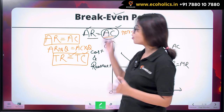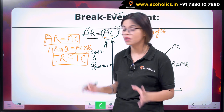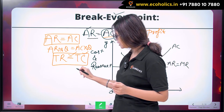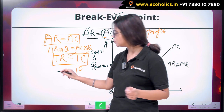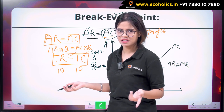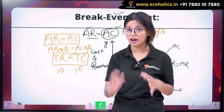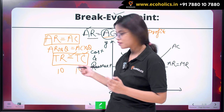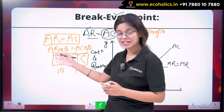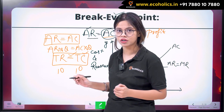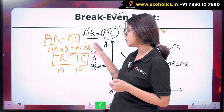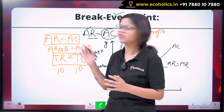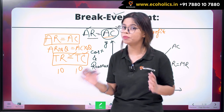I hope the break-even point is clear. To give a simple example: if you are spending 10 rupees, your revenue is also 10 rupees. Whatever you have spent, you have received back in terms of revenue — that is the meaning of TR equals TC. Here, no loss and no profit is happening; the firm is earning only normal profit.